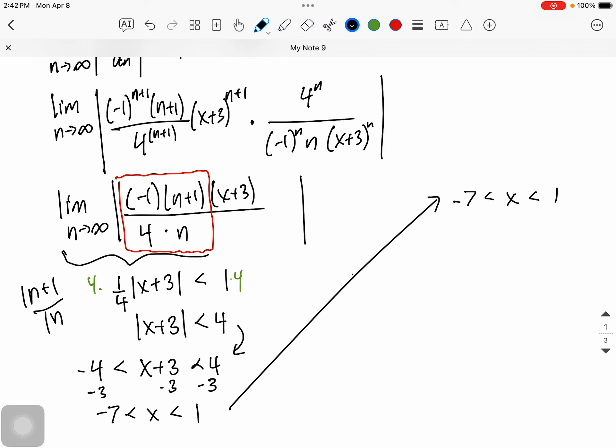And so what this says is that, hey, if you pick an x value between negative 7 and 1, it's going to converge. It looks like an interval to me. So we're really close to the answer. Before we get the final, final answer, because it's not perfect.